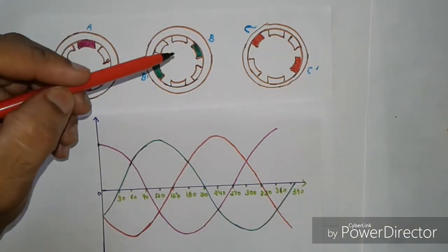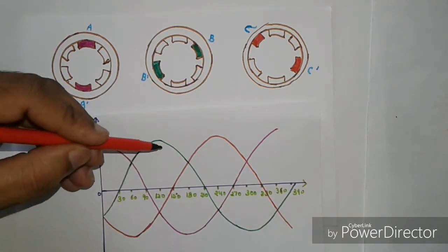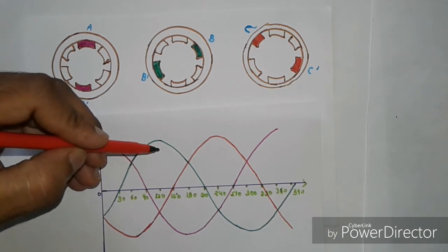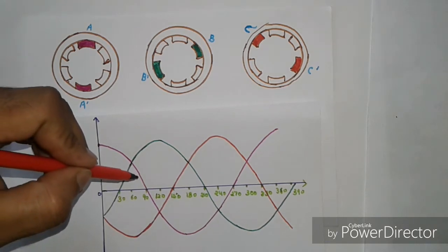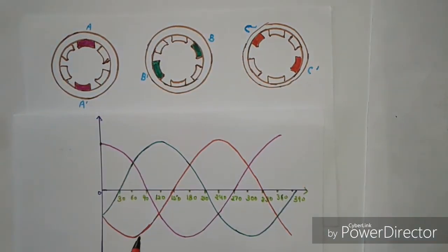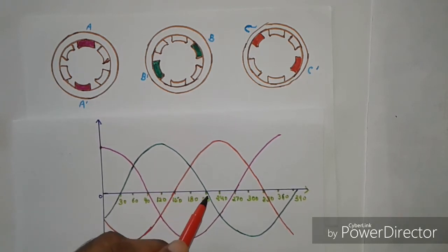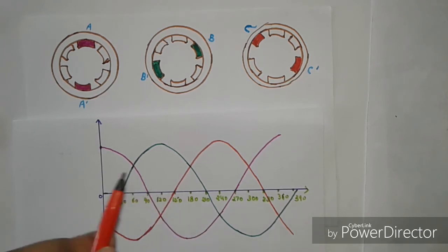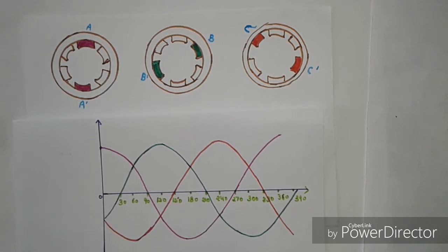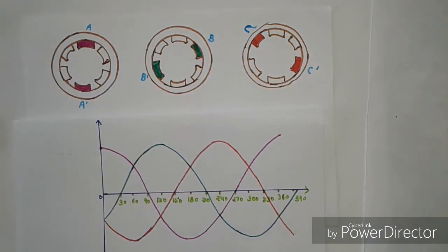At the next stage, phase B starts rising and reaches its maximum value, while A–A dash starts to decrease and falls to zero. Then, as C starts rising, B starts decreasing and falls to zero, and then the cycle repeats continuously. This means that every phase, out of the three phases, will gain its maximum value one by one, so that the rotating magnetic field is produced.